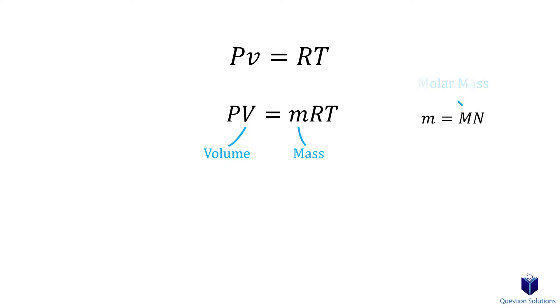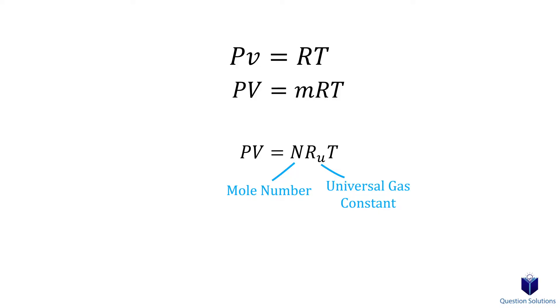If you're ever given the molar mass and mole number, you can figure out the mass by multiplying the two together. Another way we can write the ideal gas equation is like this. Here, N is the mole number, and Ru is the universal gas constant.